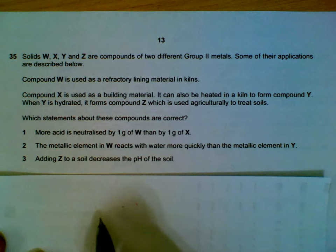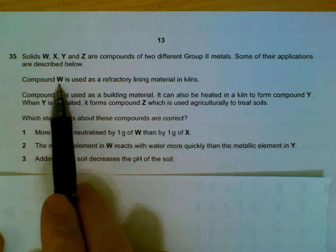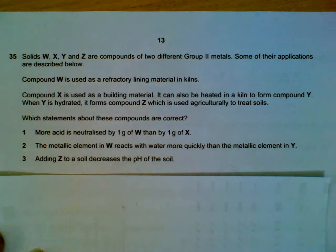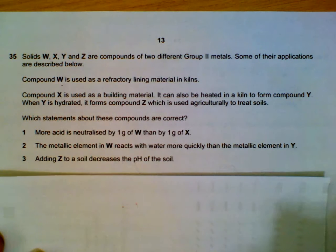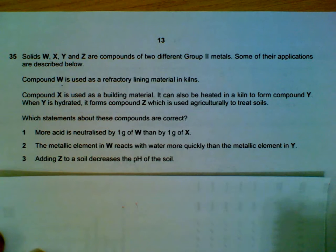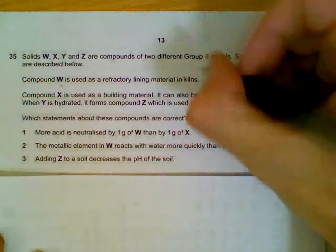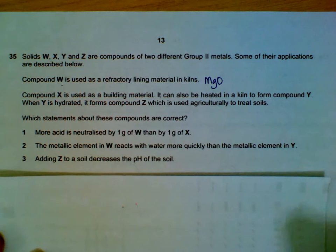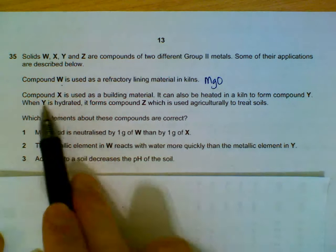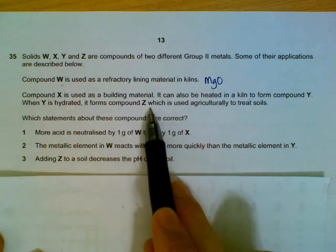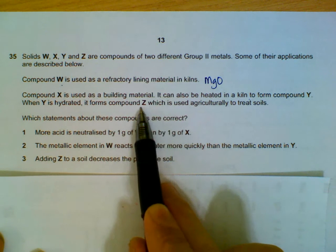Question 35: W, X, Y, Z are compounds of two different Group 2 metals. We need background knowledge: W is used as a refractory lining material, which means it is magnesium oxide. X is used as building material, heated to form Y, and used to treat soils that are too acidic. This could be calcium carbonate, calcium hydroxide, or calcium oxide.